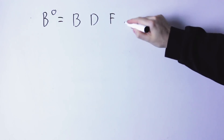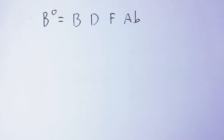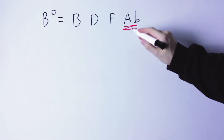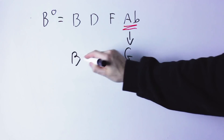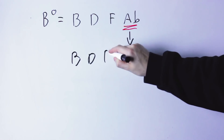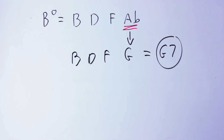Let's take the B diminished chord: B, D, F, A flat. Now if I choose any note of this chord and I lower it a half step, I get a dominant chord. For instance, if on this chord I take the A flat note and I lower it a half step to a G note, the resulting notes are G, B, D, F — and this is a G dominant seventh chord.